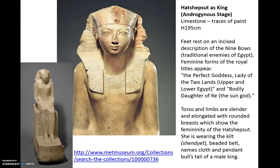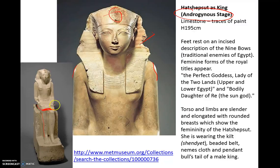Then we move to the androgynous stage. Her shoulders have thickened out just ever so slightly. She's still wearing the Nemes cloth, and there would have been the uraeus, but her clothing has changed — she's no longer wearing a long skirt but instead the royal kilt, the Shendyt. So the clothes are starting to look male even though she still has female breasts. She's wearing the beaded necklace of the king and the Shendyt of the king. She is also shown with a bull's tail — again part of the kingly regalia. Her name is still written in a feminine way, but we're starting to see a shift in how she presents herself.